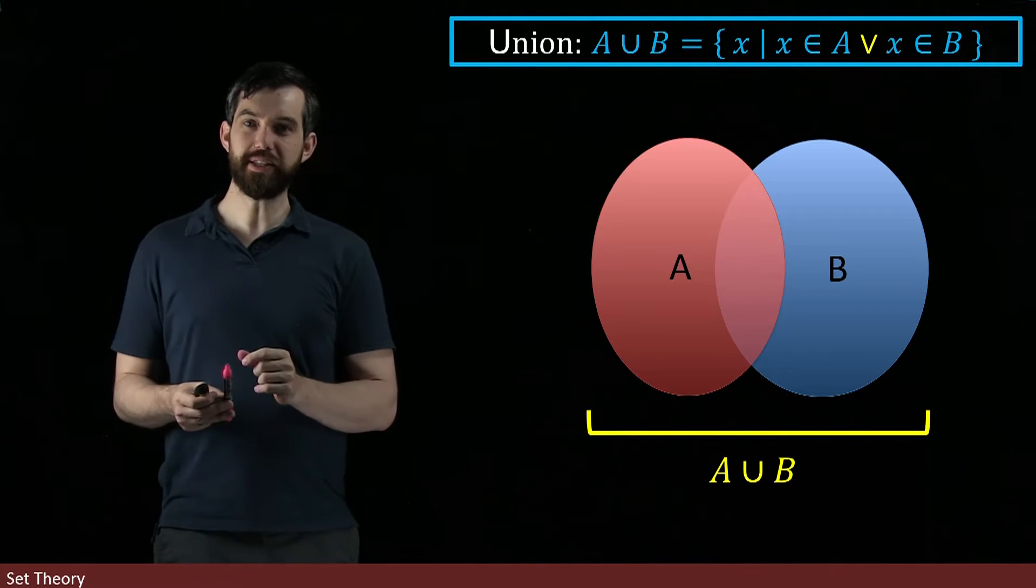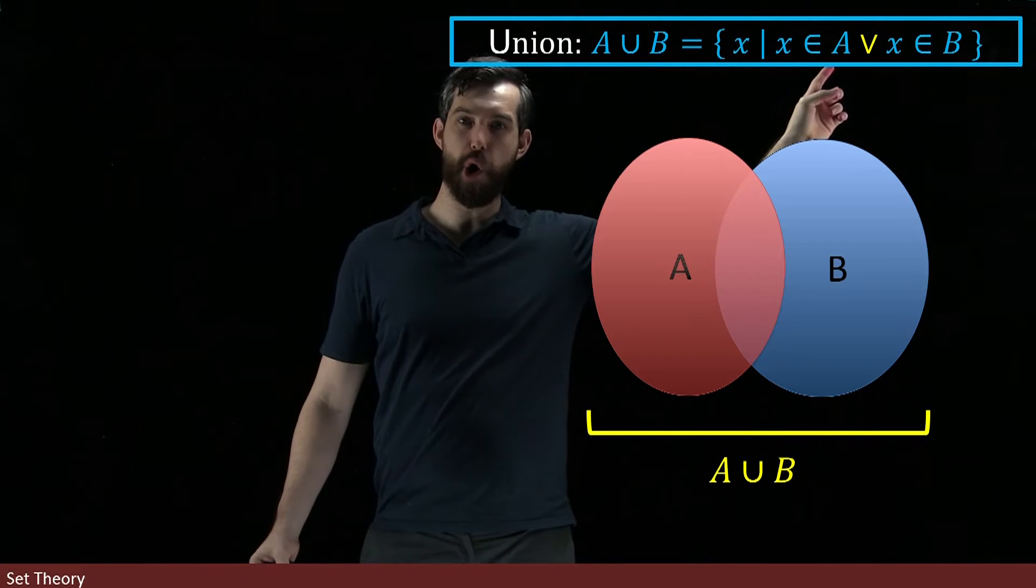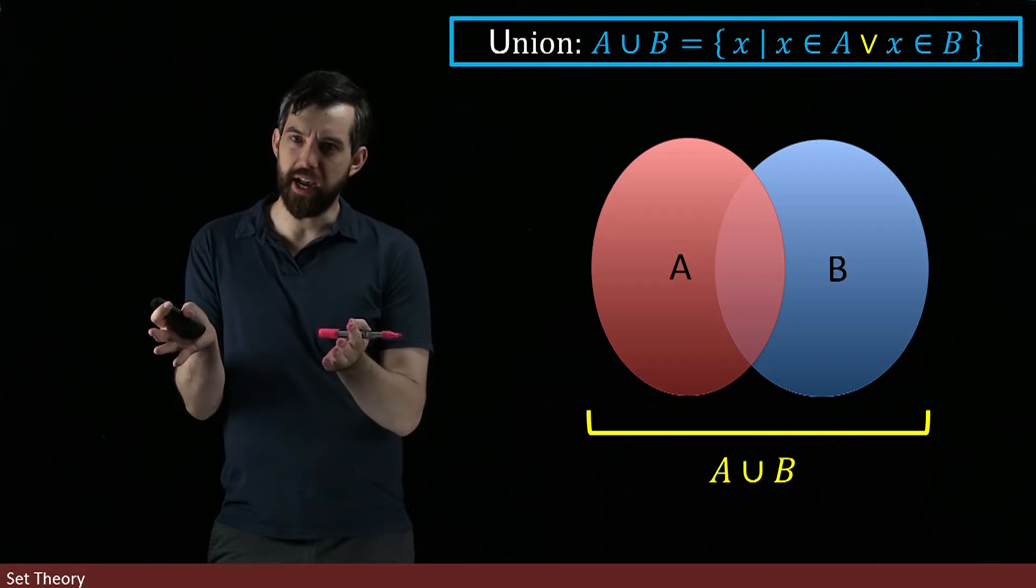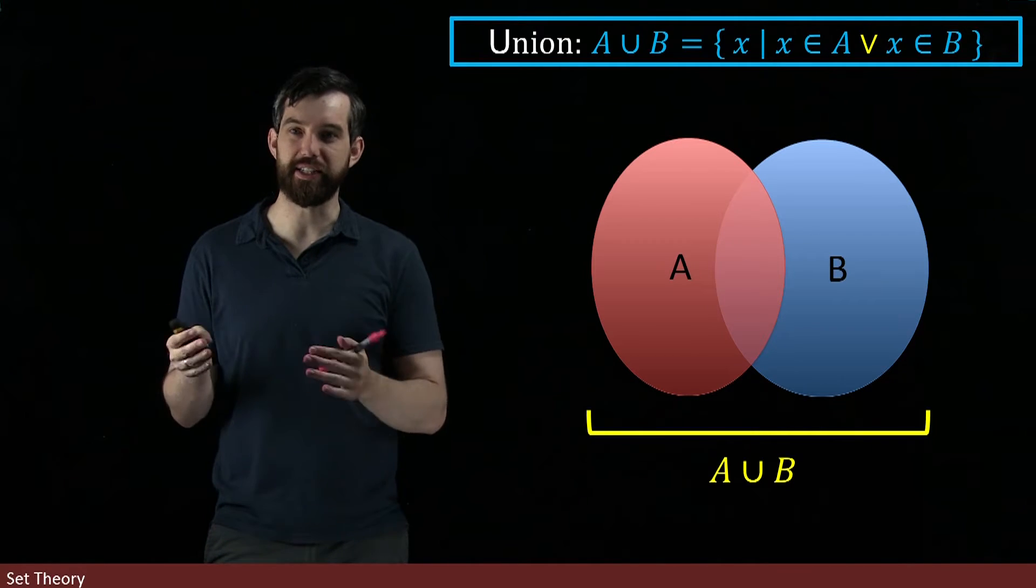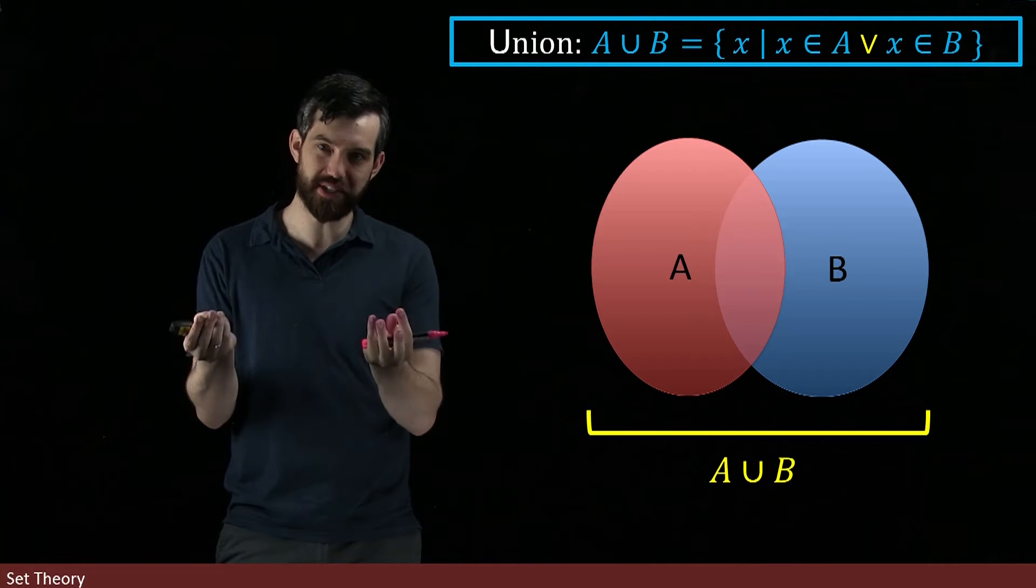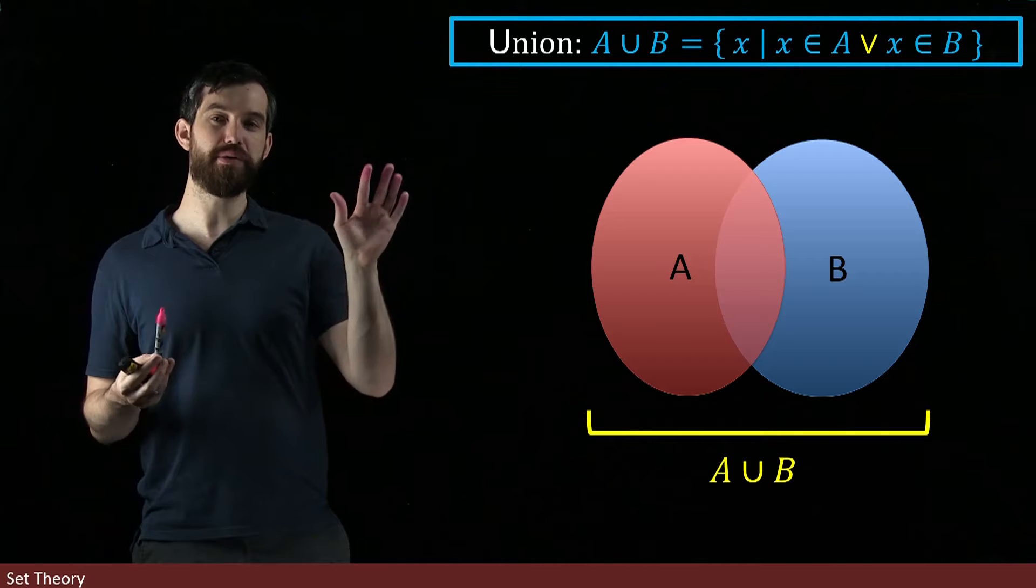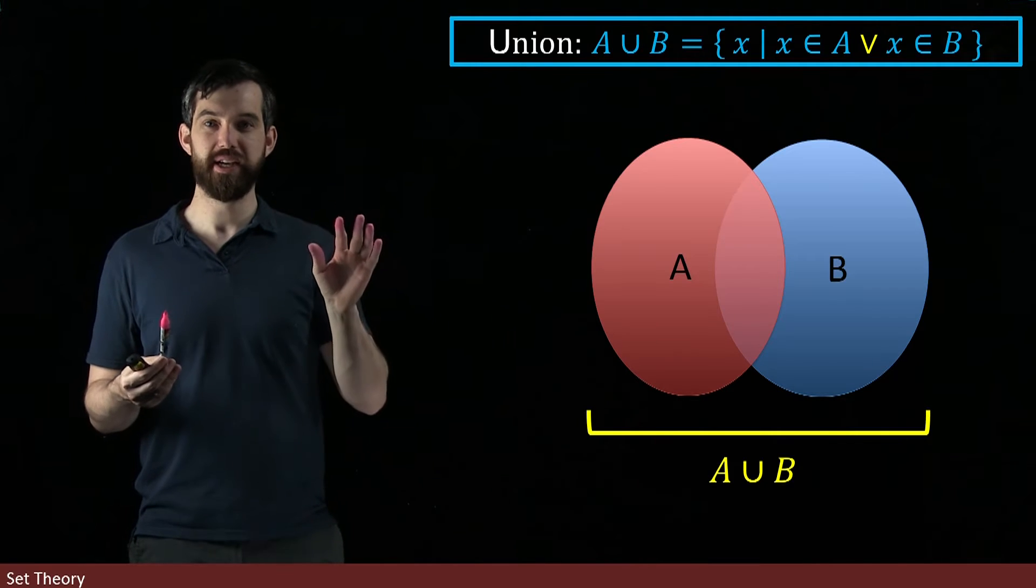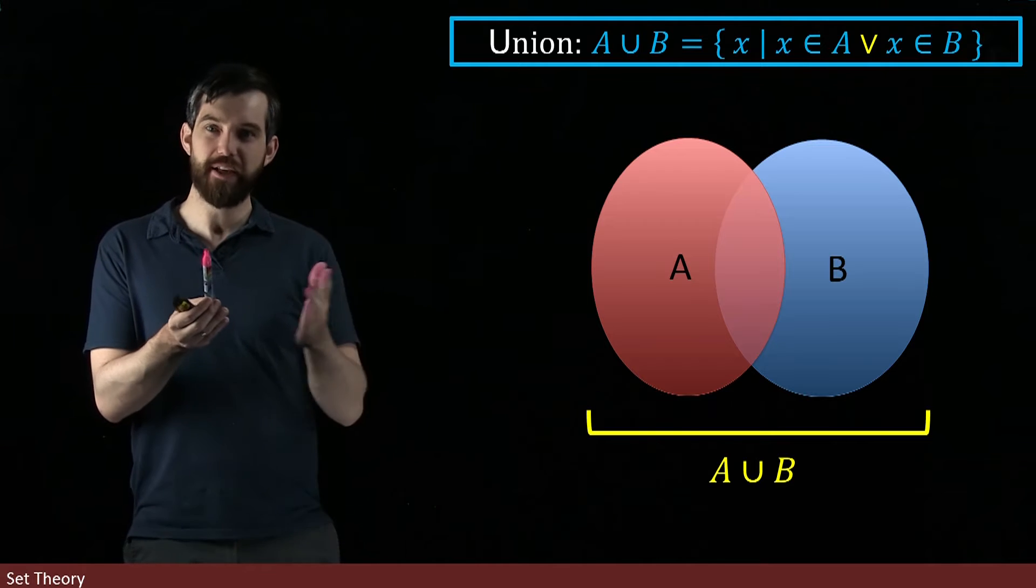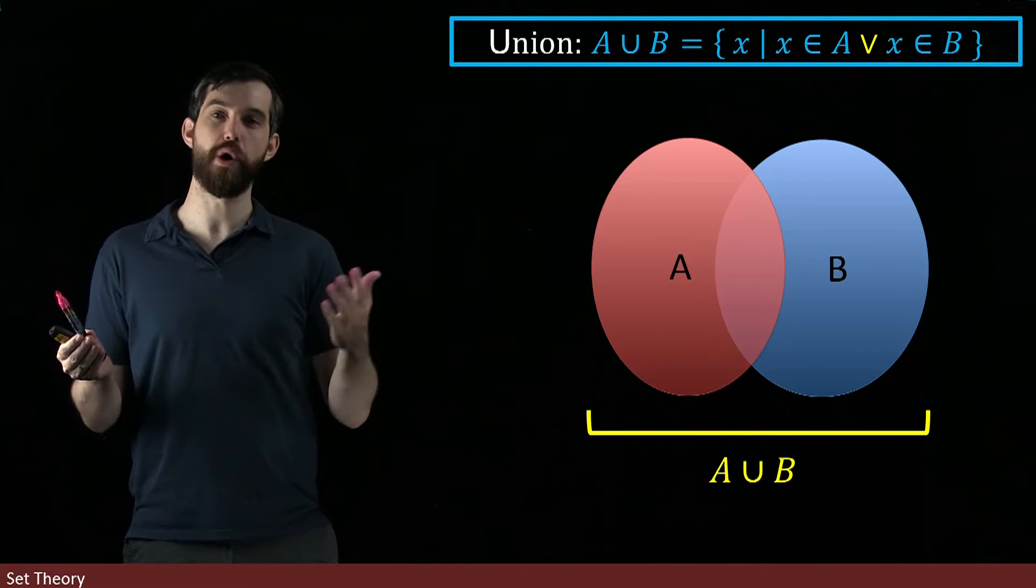Now you'll notice that in the definition of the union I put an or statement. So the union is analogous in the world of sets to the disjunctive or statement that we have in logic. Indeed, if we think about union as being some x's such that they obey some property, that property is a disjunctive—it's an or statement. It's either in the one or in the other.